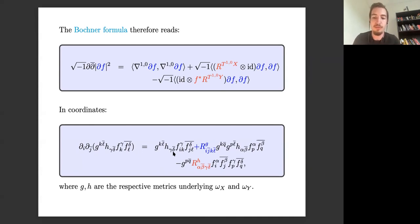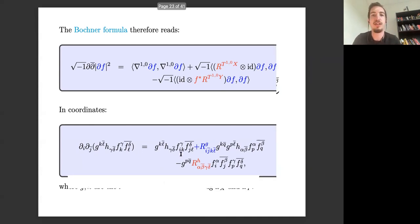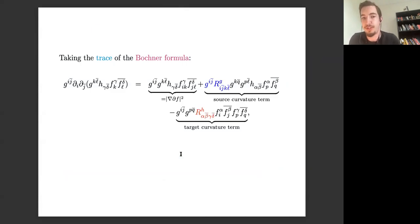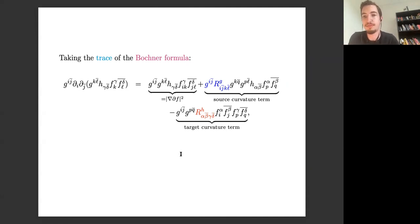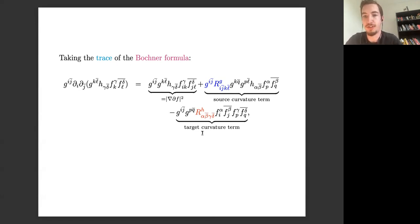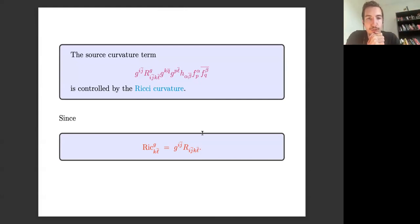We have three terms to understand, but really only two: the first term is just the norm squared of the covariant derivative of ∂f — a positive term, perfectly fine. The next term is the source curvature term, and then we have the opposing contribution from the target curvature term.